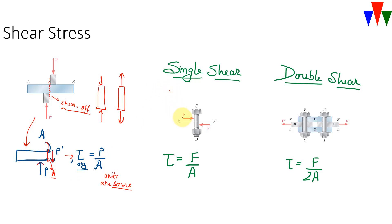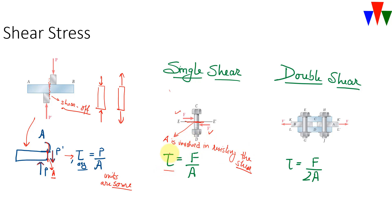Now let us look at the difference between single shear and double shear. Single shear means that a pair of forces is trying to shear off the body at one plane — this is the plane where the two forces are trying to shear off the bolt. In this case, only one area of cross-section A is involved in resisting the shear. As per our definition, shear stress tau equals F by A, since only one area is involved.